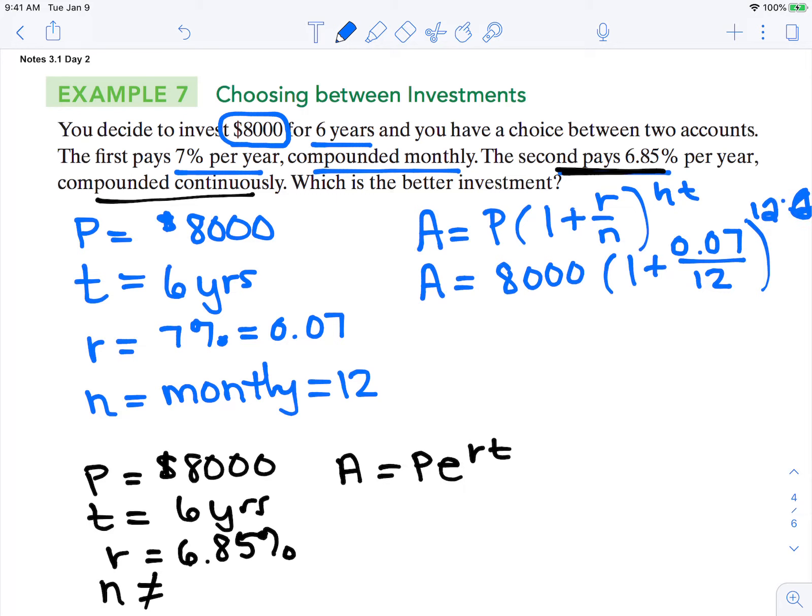We want to type that into our calculator. You're going to do 8,000 parentheses, 1 plus 0.07 divided by 12, finish off the parentheses, and then do your carat symbol, 12 times 6, and then enter. So our end amount will be approximately $12,160.84.